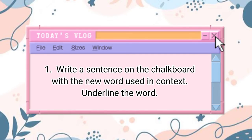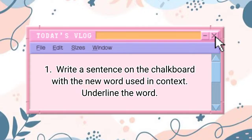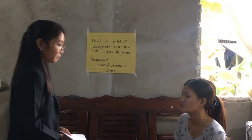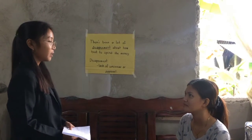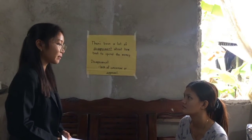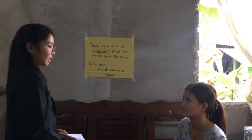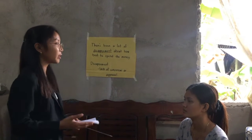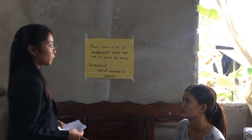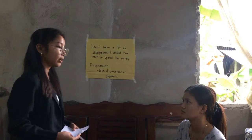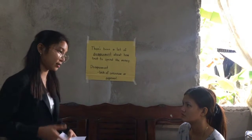Step one: Write a sentence on the chalkboard with a new word used in context, and underline the word. Good morning, Mishina. Good morning, ma'am. Now I will discuss correcting sight word knowledge deficit, but before that I would like to introduce you to a new word that may help you understand the text.